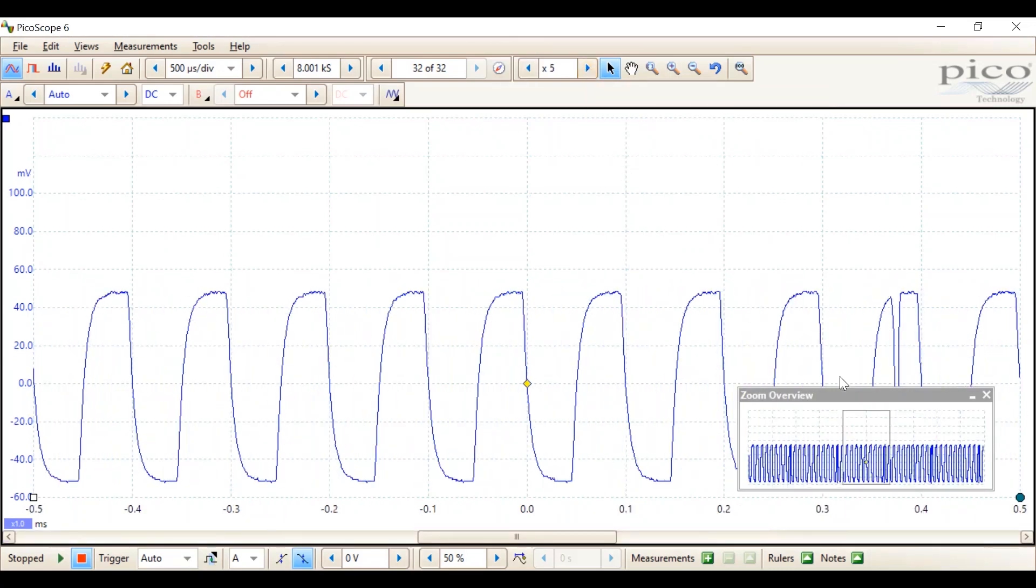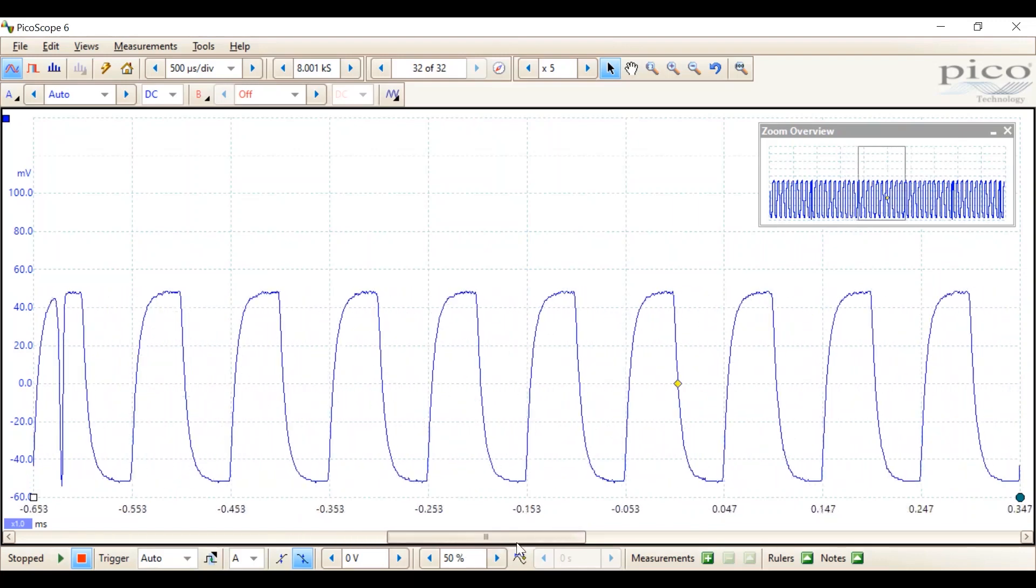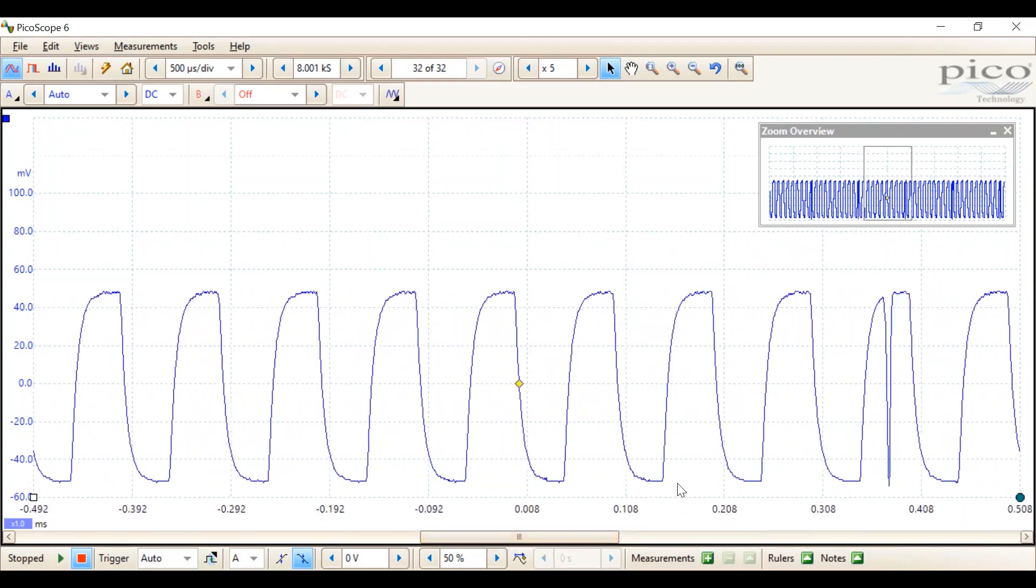Here you can see this is the zoom overview showing the full acquisition, and in the box is what we can see on the display. We can move through that. Although we can see a glitch here, we're not going to concern ourselves with that. We're going to use this to show the triggering. So to measure the width of a single pulse, I'm going to drag rulers from this box in the bottom left hand corner. Let's put that ruler 1 there, and then ruler 2 here. We can read the delta between the two cursors as being just over 50 microseconds. So that's all we need to know for the moment.